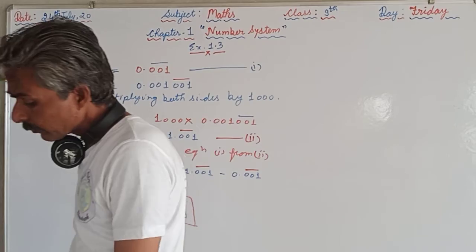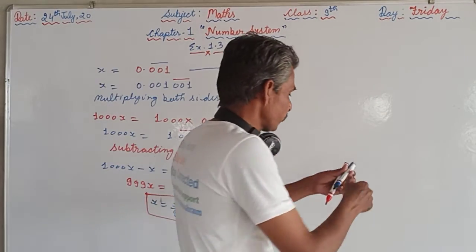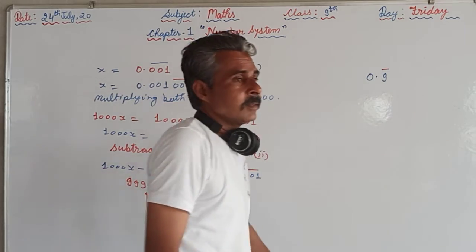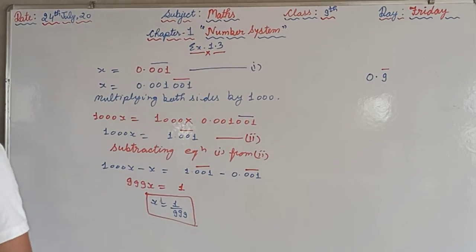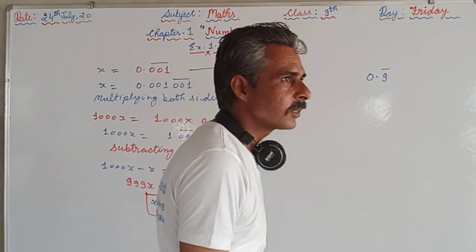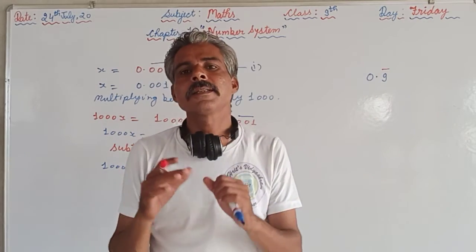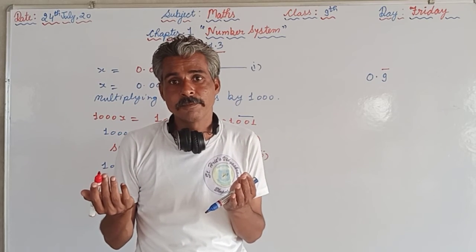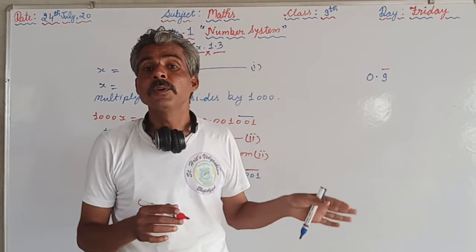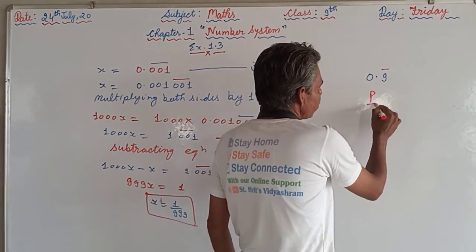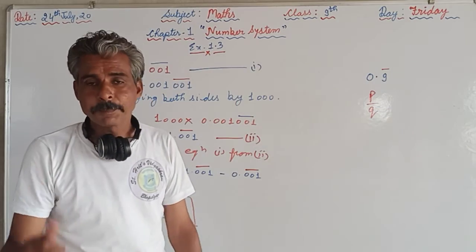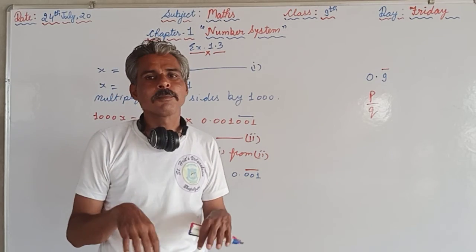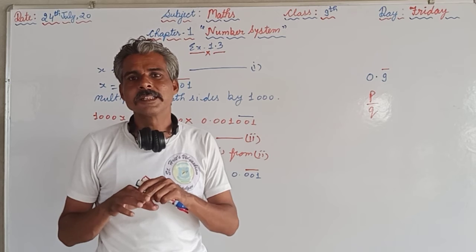One more question is there in your textbook: 0.9 bar. Express 0.9 bar into p by q form. And it is also written in your book whether you are surprised with the answer. Why you are surprised with the answer? Then you can be surprised by the answer when first of all you will find the p by q form. And you are supposed to practice at your home and you are supposed to take the pic of that and you are supposed to upload on the school's WhatsApp number. And if you are facing any kind of problem then you can inform us. We will try to rectify your doubts so that you can easily proceed the chapter.